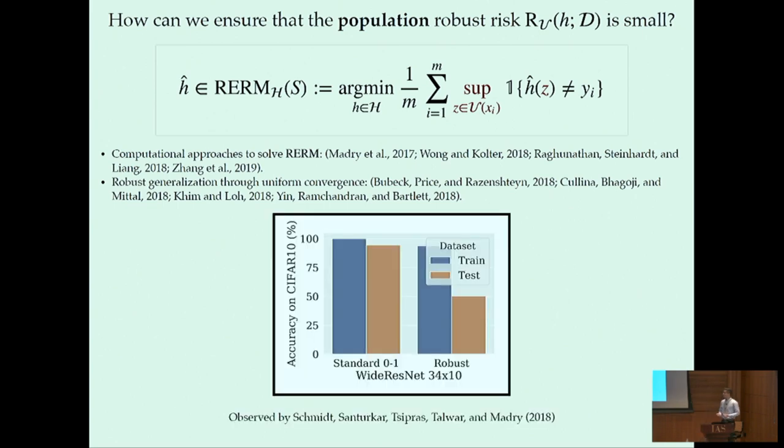However, in practice, there is empirical evidence that suggests that the robust risk might not concentrate as well as the standard risk. And there can be big gaps between the robust training error or the robust training accuracy and the robust test accuracy.